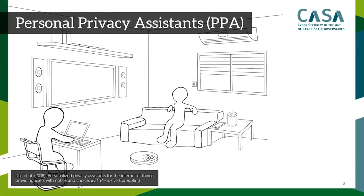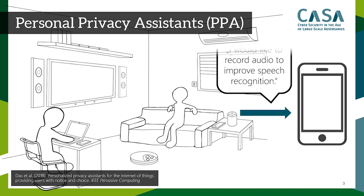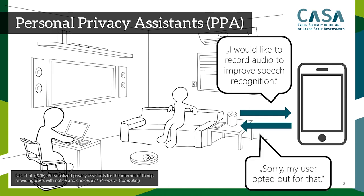Personal privacy assistants — PPAs for short — were proposed as a way to give users more control about their data in private IoT-equipped environments. The IoT device could send a request to the personal privacy assistant, which could be on a smartphone that hosts the PPA. The PPA then knows the user preferences, for instance by directly asking the user, and then communicates this to the IoT device.